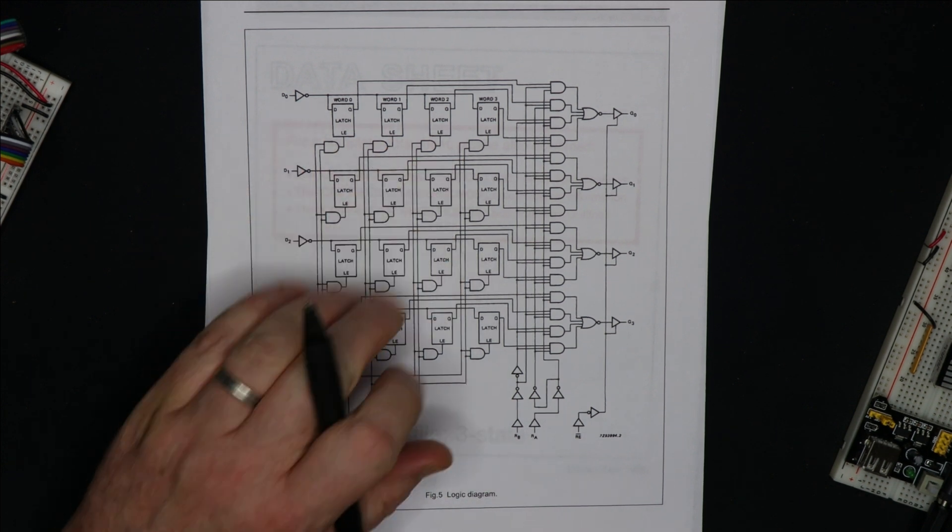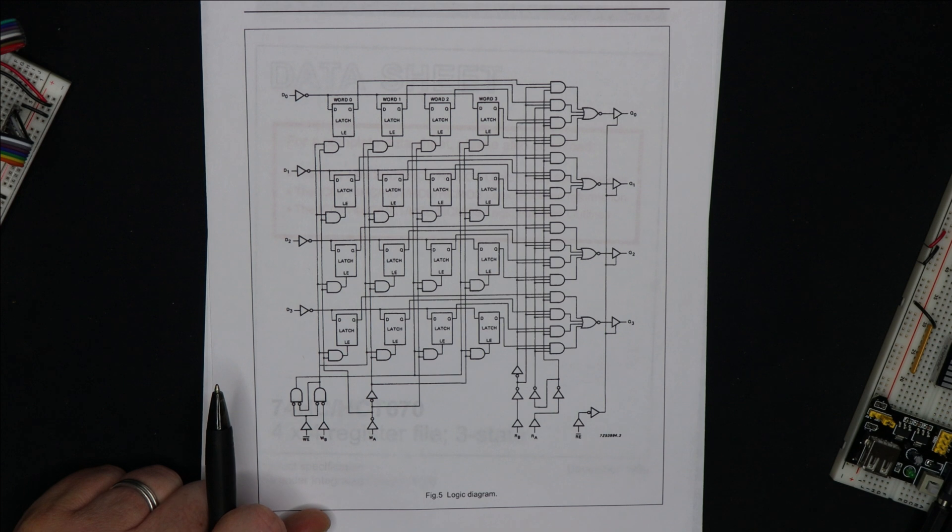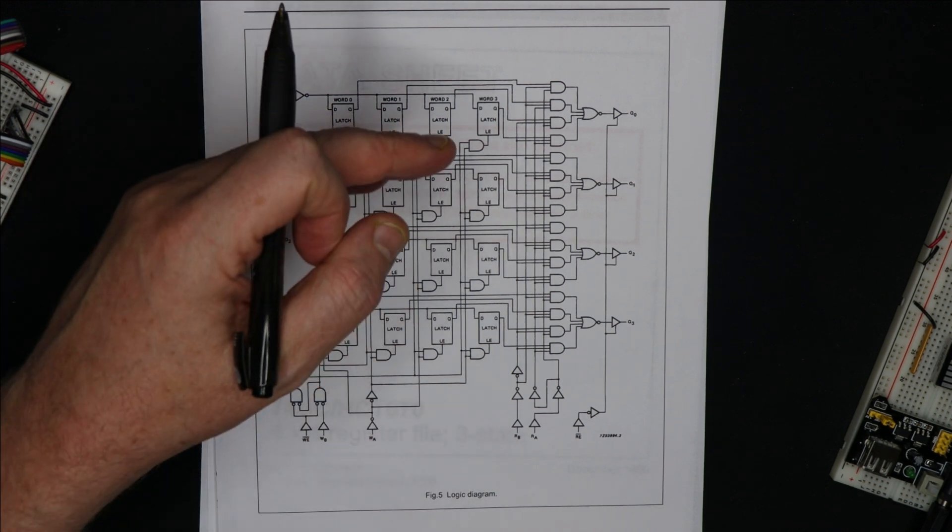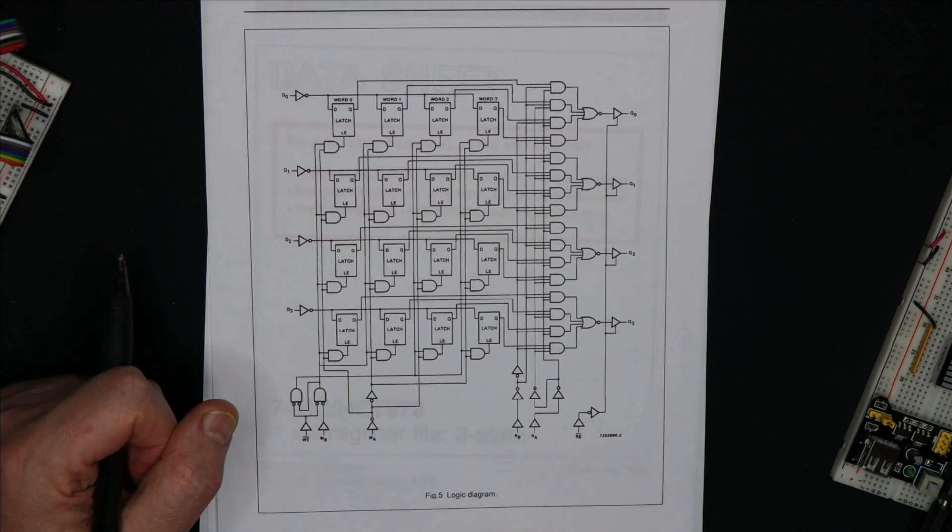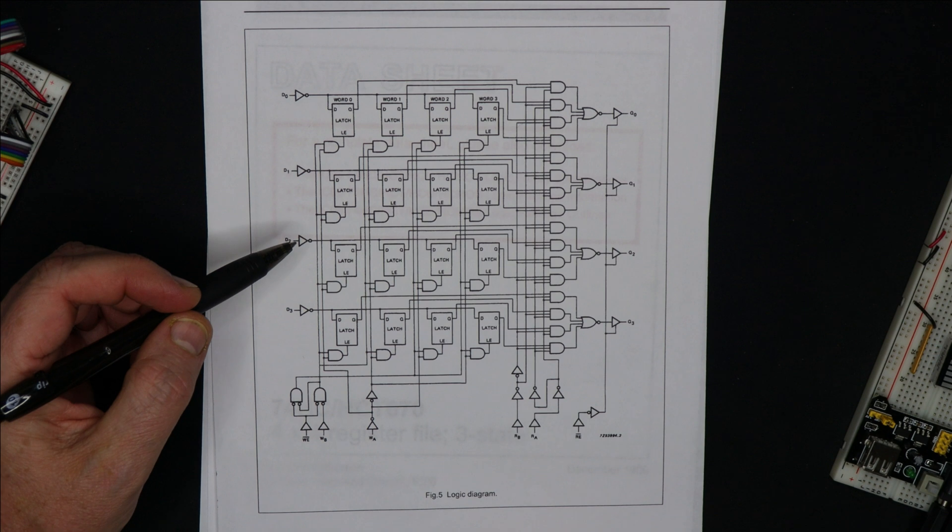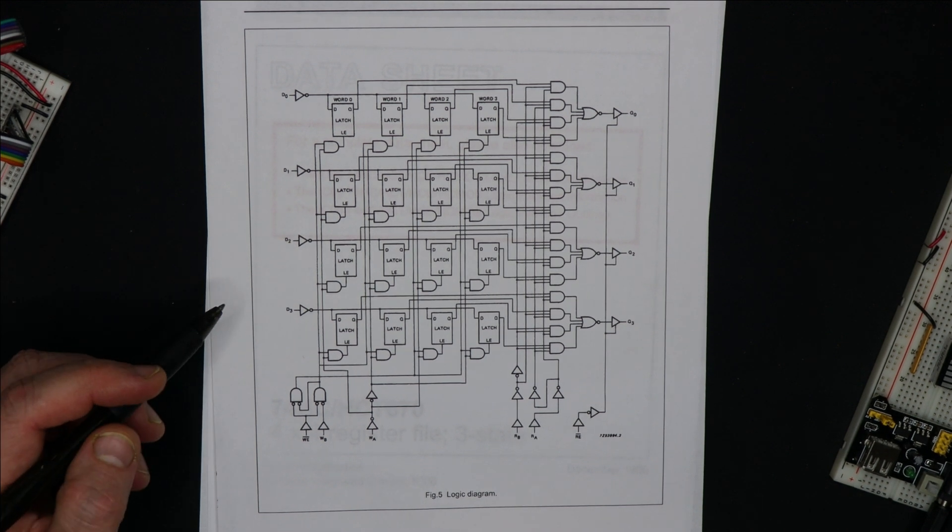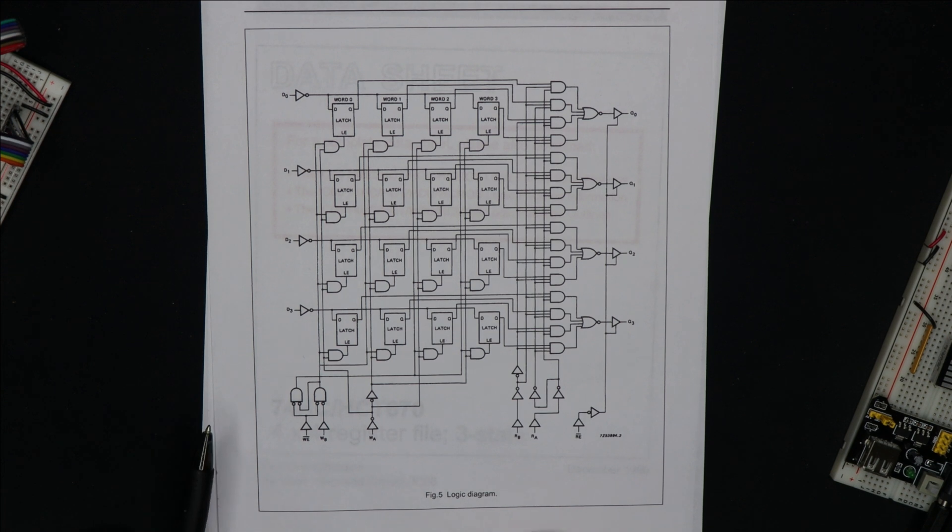So I've used four of these chips in my register file and I've arranged them in a setup that gives me eight bits in and two ports on the output, each eight bits. So it's a four by eight bit triple port register file. But let's take a quick look at the 74HCT670 in action.